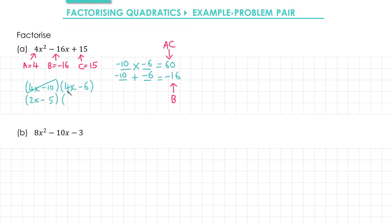In the second bracket, we also have a common factor of 2, so we'll divide that one by 2 as well, and we get 2x minus 3.